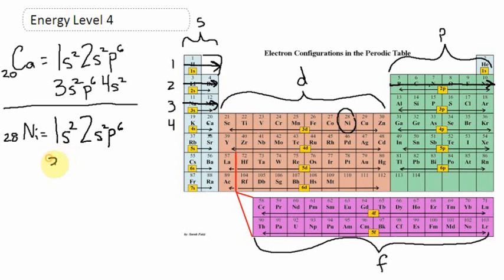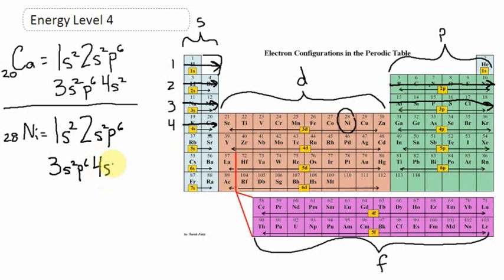I'm going across now into the p orbital — the p orbital will hold six electrons. 2s2, 2p6. On the third energy level, in the s orbital, I can hold two electrons — third energy level, s orbital holding two electrons. The third energy level p orbital is going to hold six electrons. So the third energy level is filled. Let's go to the fourth energy level and fill up the 4s — the s orbital will hold two electrons.